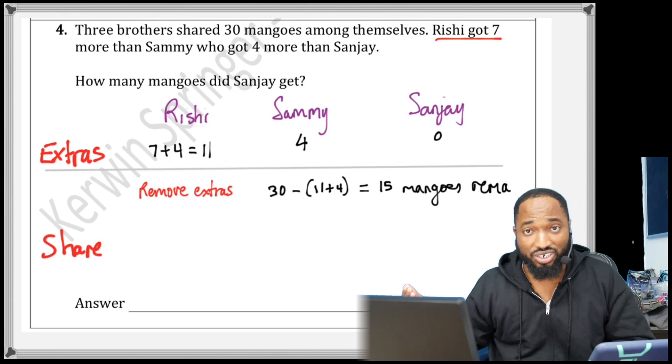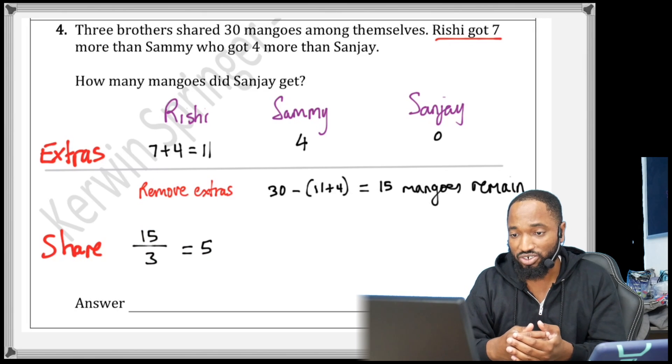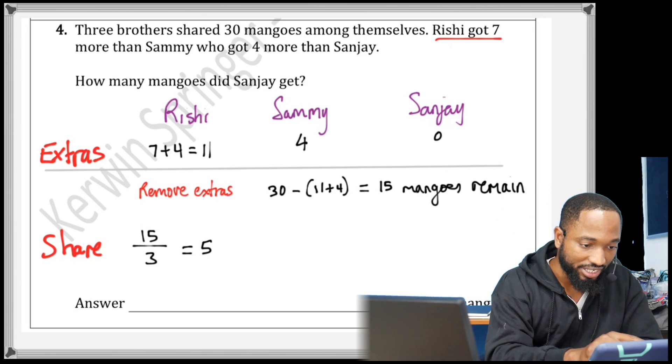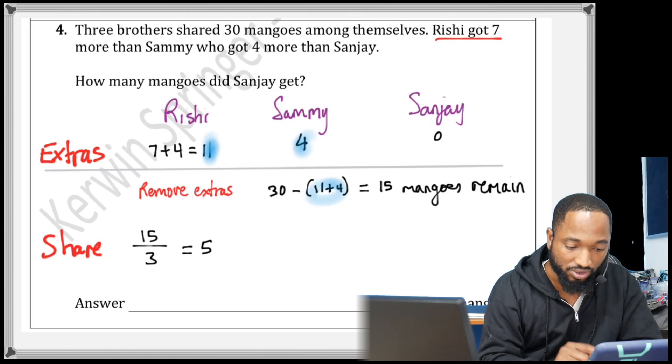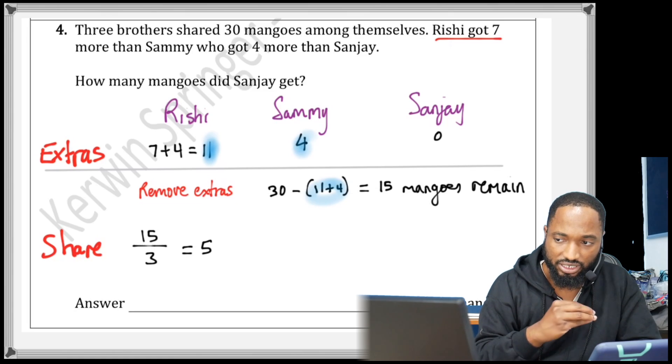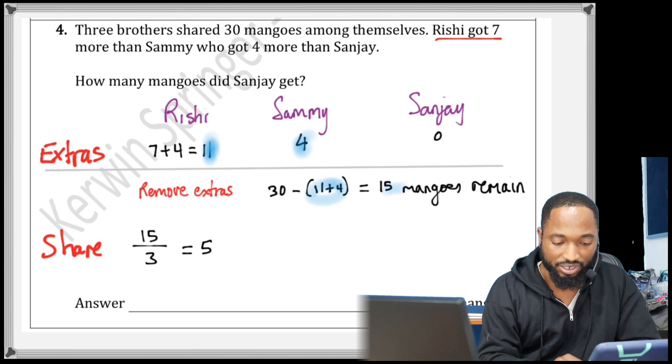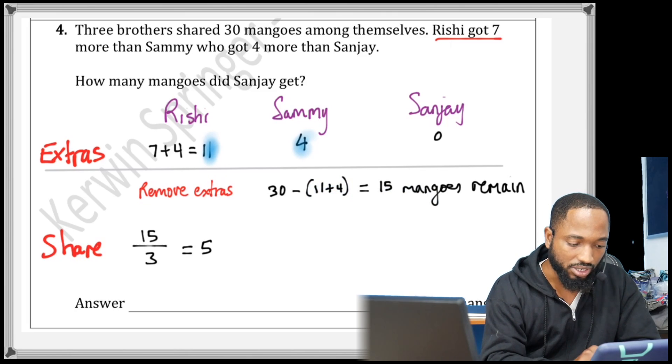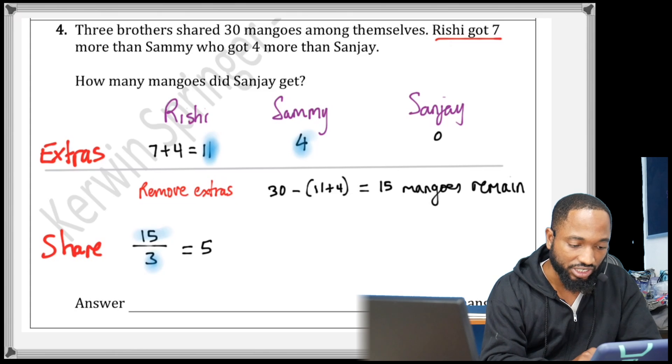So removing the extras, same principle: remove the extras and then share it up. So the extra will be the 11 extra he's getting plus the 4. That's 15. Take away 15 is 15 mangoes. 15 divided by 3 is 5.